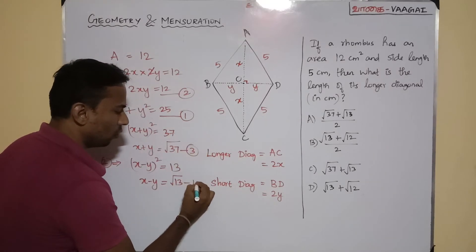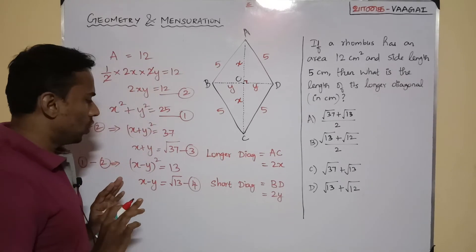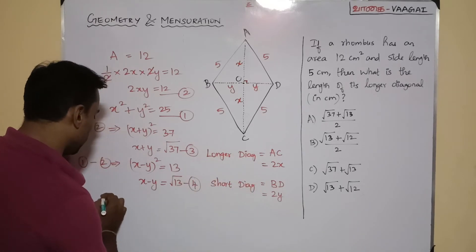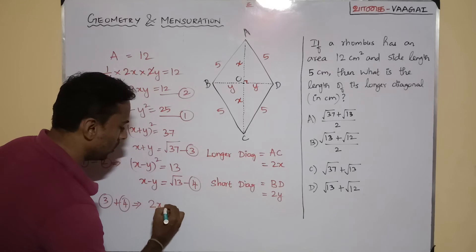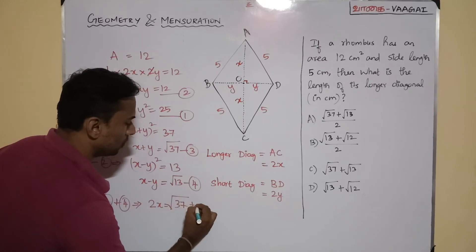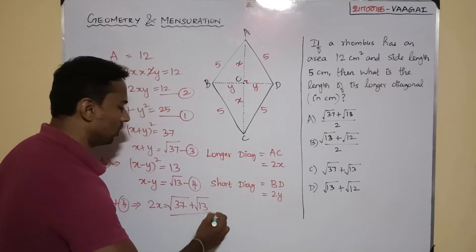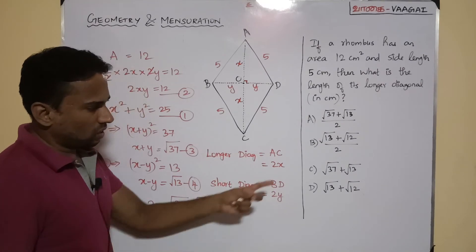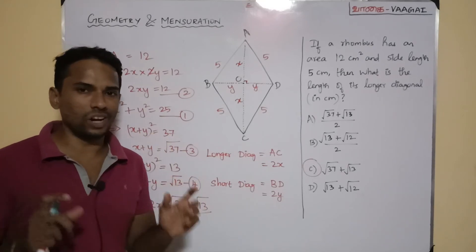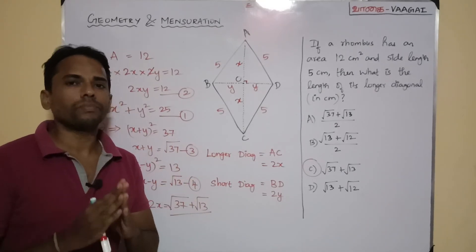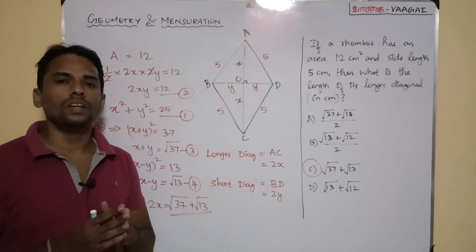From equations 3 and 4, we add them: (x + y) + (x − y) = √37 + √13, which gives 2x = √37 + √13. That is the length of the longer diagonal. This matches option C: √37 + √13. I hope the approach is clear. If you have any doubts, please leave them in the comment box. See you in the next session with another interesting question — thank you so much!